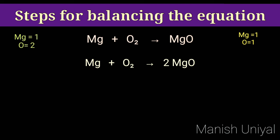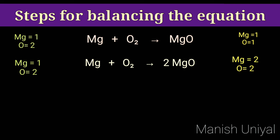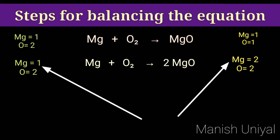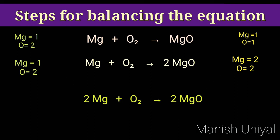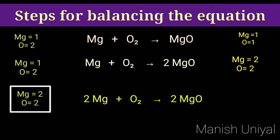The equation becomes: Mg + O₂ → 2MgO. Now in the reactant side there is 1 magnesium and 2 oxygen, while in the product side there are 2 magnesium and 2 oxygen atoms. We can see magnesium is not balanced. So we will write 2 as a coefficient in front of Mg in the reactant side. Now our equation is: 2Mg + O₂ → 2MgO. In the reactant side, magnesium and oxygen are both 2; and in the product side, magnesium and oxygen are both 2. The equation is now balanced.